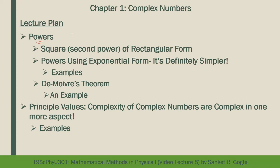This is the lecture plan. We will consider powers of complex numbers, restricting to cases where z is raised to an integer n. We'll first look at squaring in rectangular form, then see why exponential form is more convenient for higher powers. After that we'll derive De Moivre's theorem and see an example. Finally, we'll discuss principal values, since rectangular form is unique while exponential and polar forms are not.